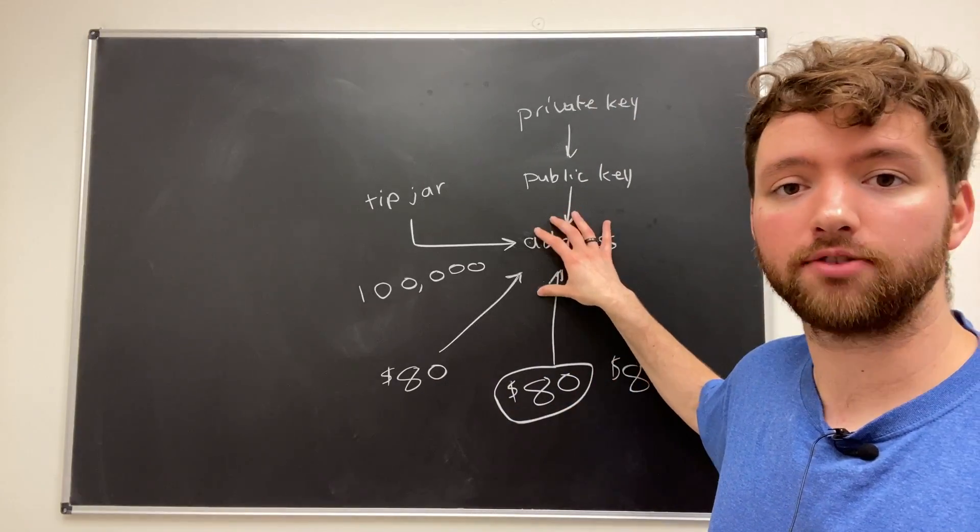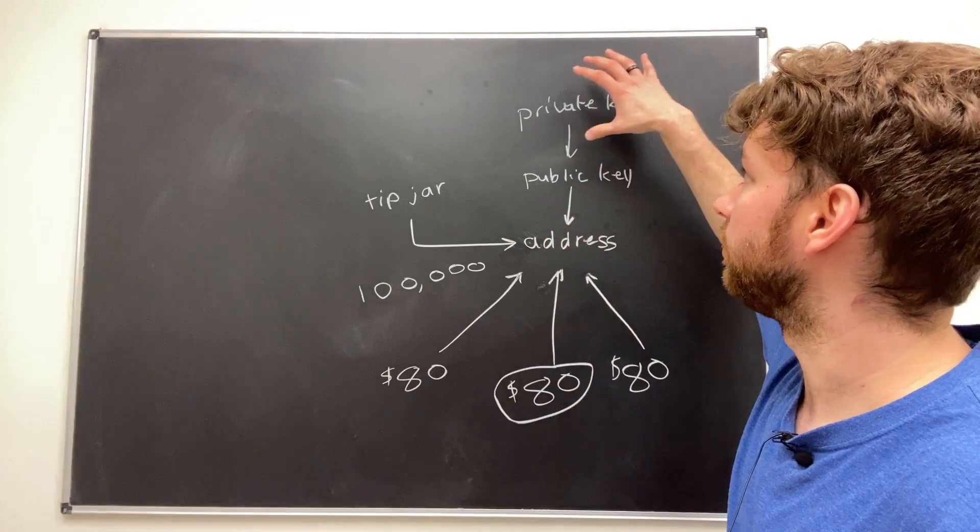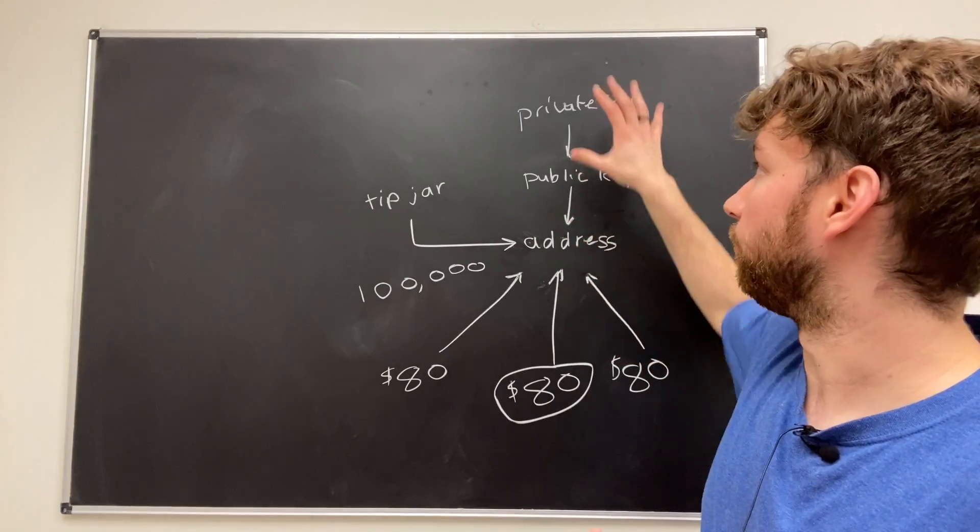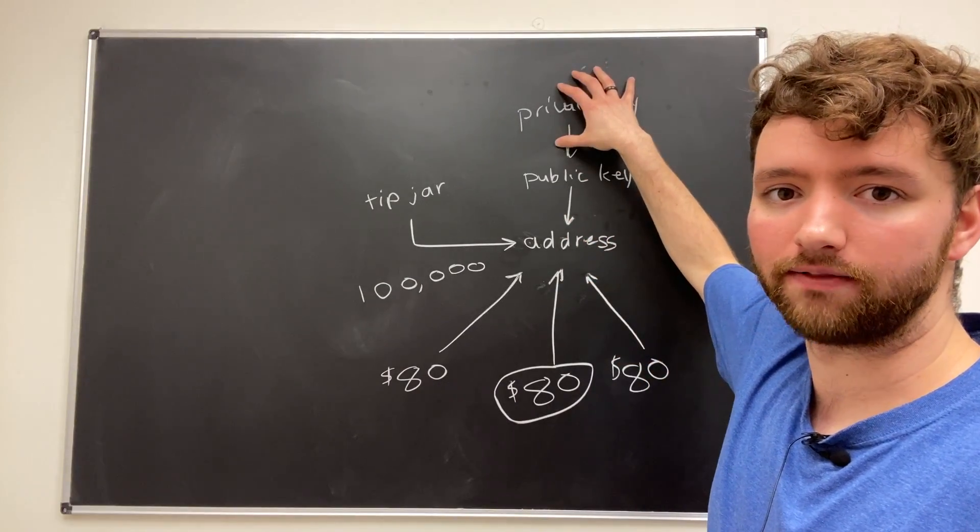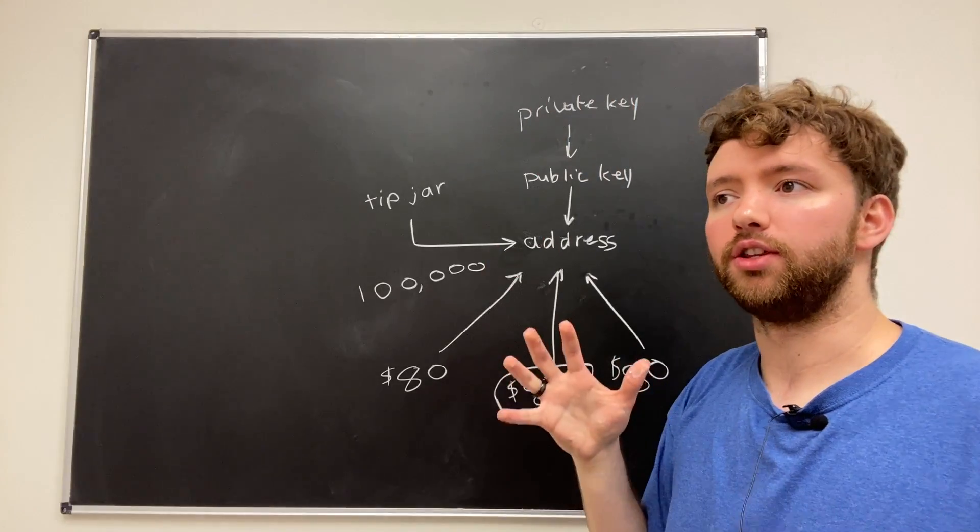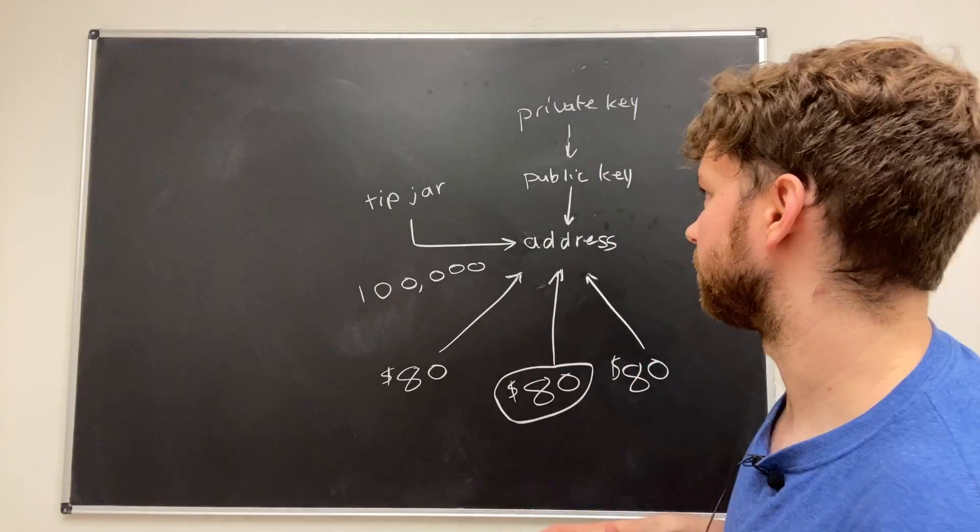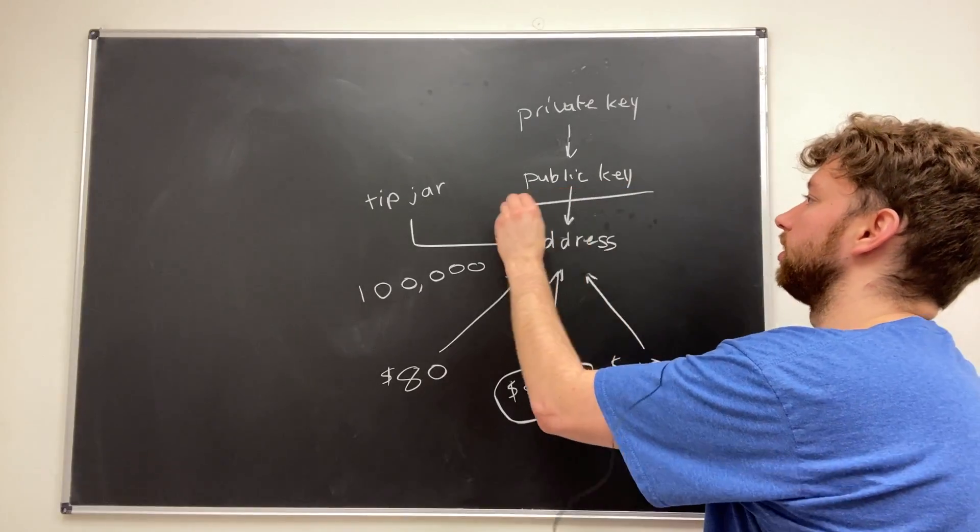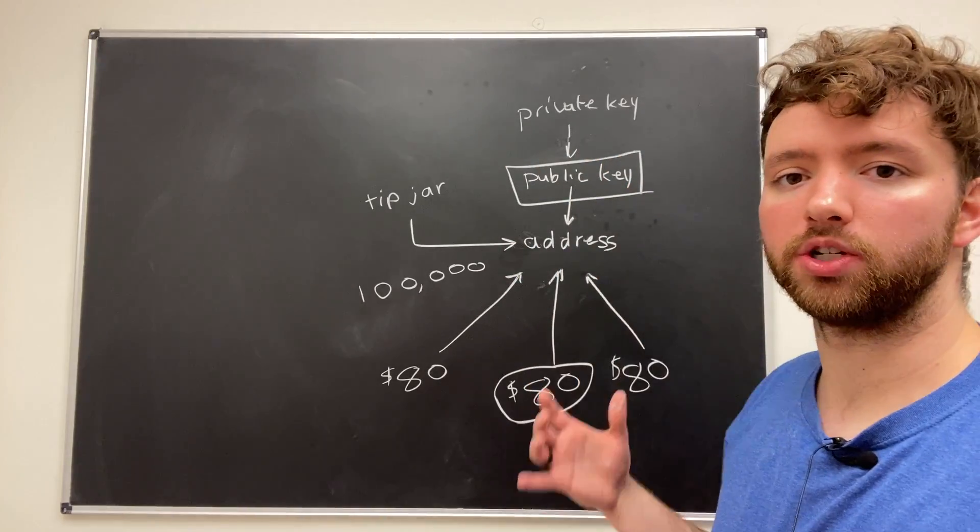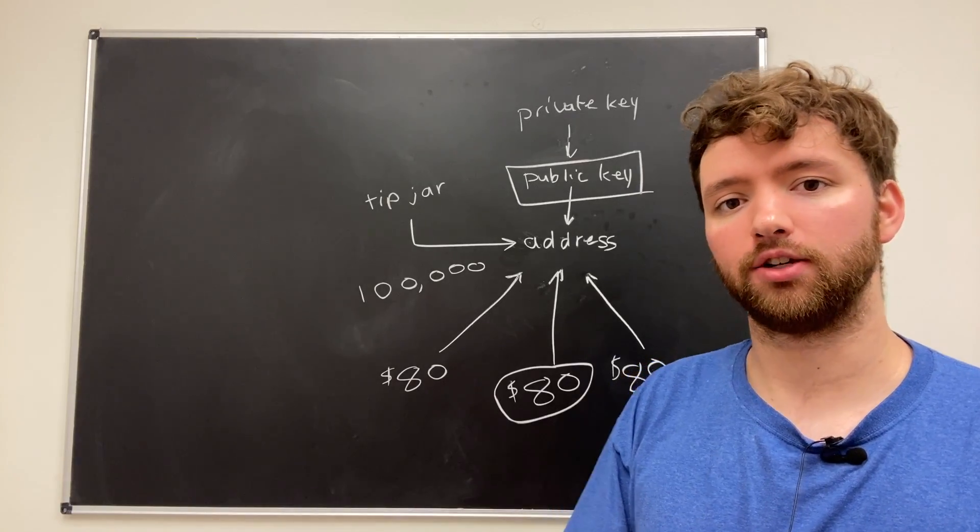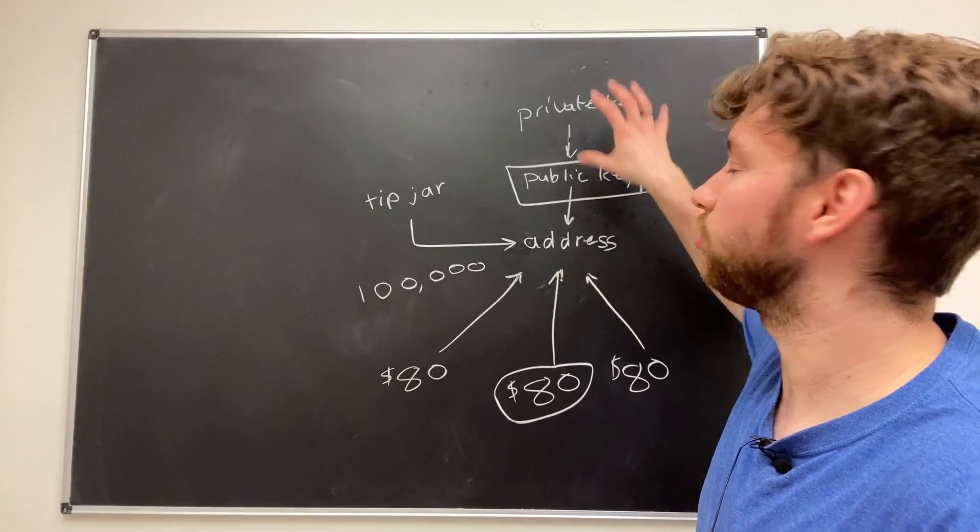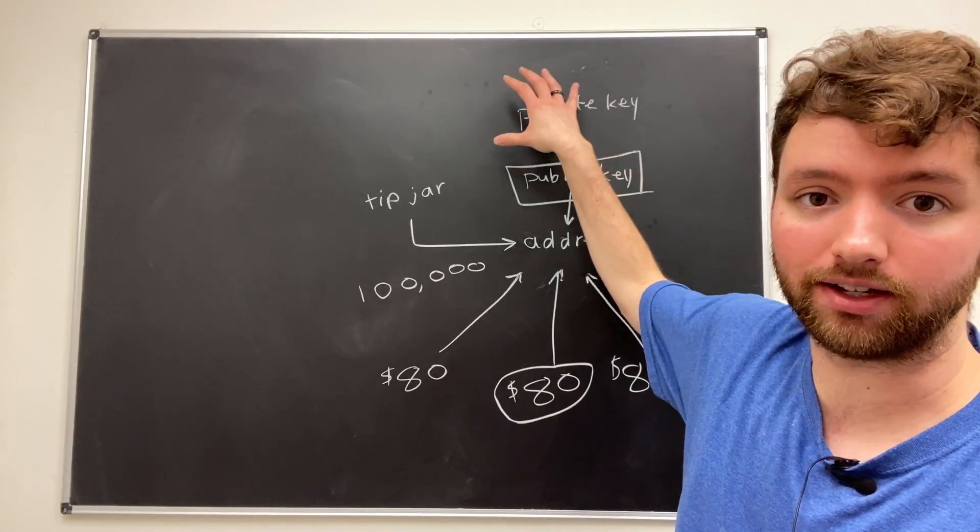So ultimately, because you're not supposed to reuse addresses, and there's a one to one connection between the private key and the address, you don't want to just have one private key. Now the actual technical issue is that anytime you spend money from your wallet, your public key is exposed, which is one layer less secure than people just knowing your address. It's one layer closer to people figuring out your private key.